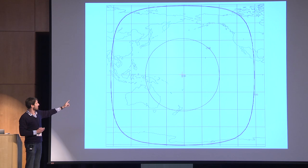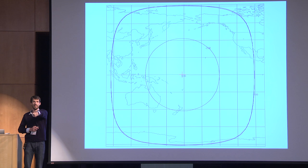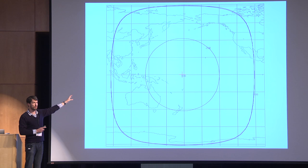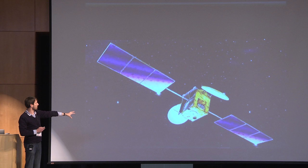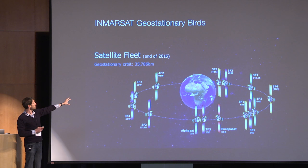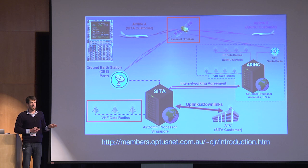Who recognizes this kind of plot? We're looking at the spot beam coverage of one of the birds in the InMarsat constellation, looking at the Pacific. This is an artist's rendition of the actual satellite. It's part of a constellation of InMarsat geostationary birds and they service the whole planet.